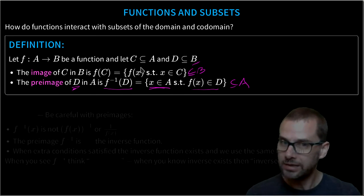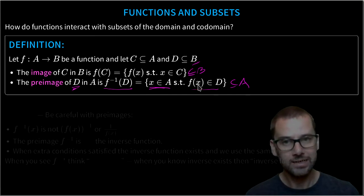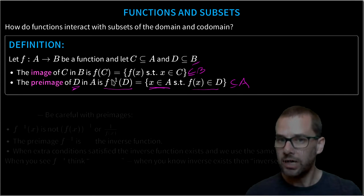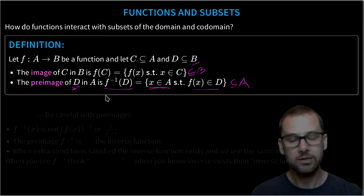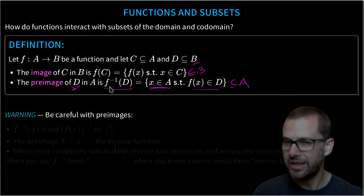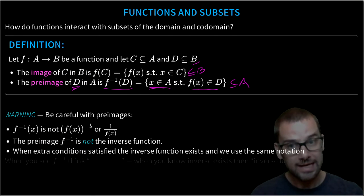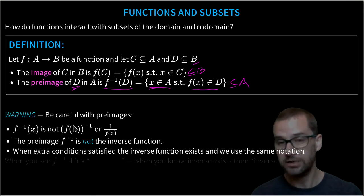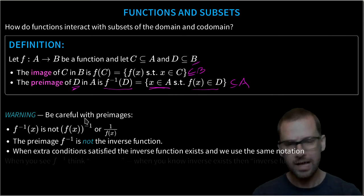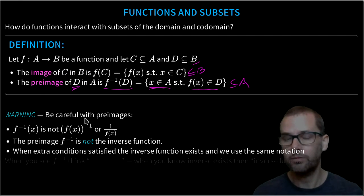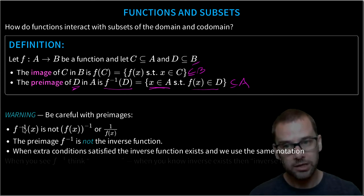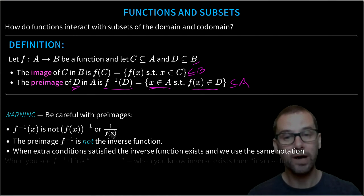When we take a set D in B, we can ask what all the points are that map into that set — that's the pre-image of D. The pre-image unfortunately uses the notation F to the minus one, which you will have seen in a couple of different contexts. We have to be careful: in the current context, F inverse of X is not F of X to the power of minus one, in part because F might be a function on things that have nothing to do with numbers, so arithmetic might not be associated with the objects at all. This notation is also not one divided by F of X.